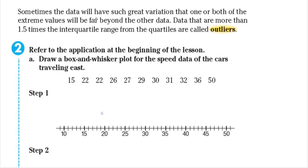Let's talk about outliers. Sometimes data will have such a great variation that one or both of the extreme values would be far beyond the other data. Data that are more than 1.5 times the interquartile range from the quartiles are called outliers. A good example is from the last lesson when we talked about the number of gold medals the United States won. In 1980 we had zero, and in 1984 we had a jump to 83. Those are considered outliers because they are far beyond the other data.